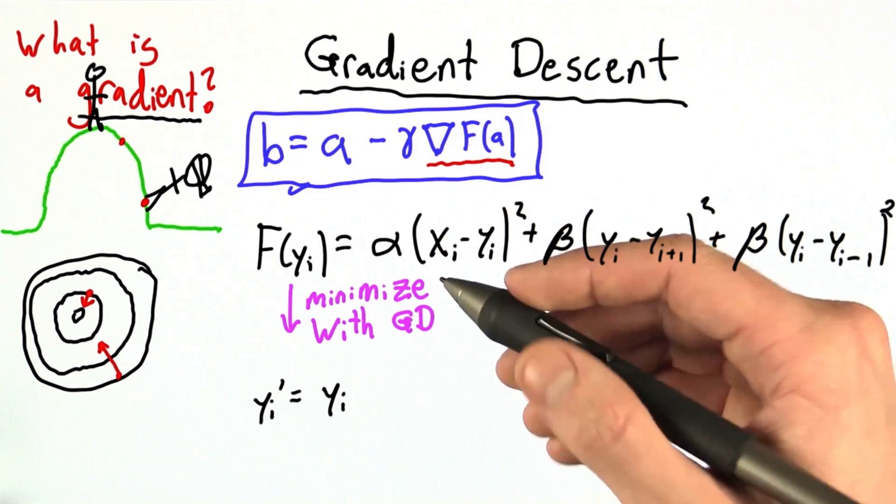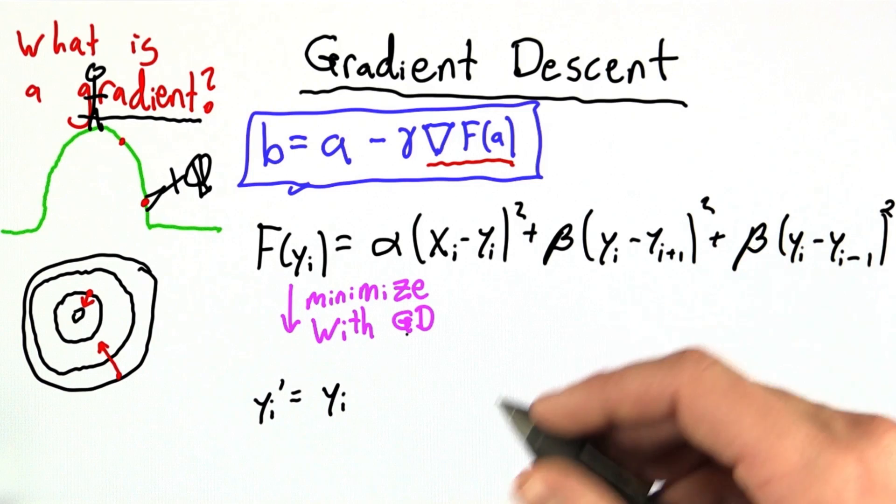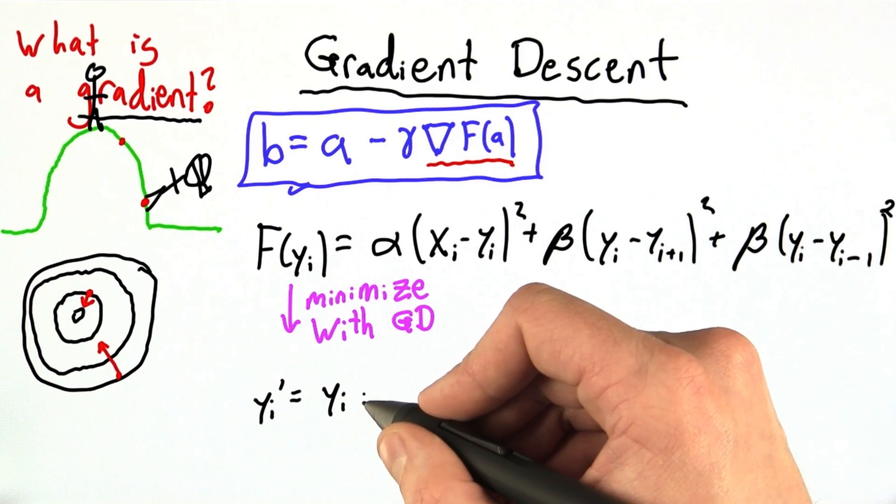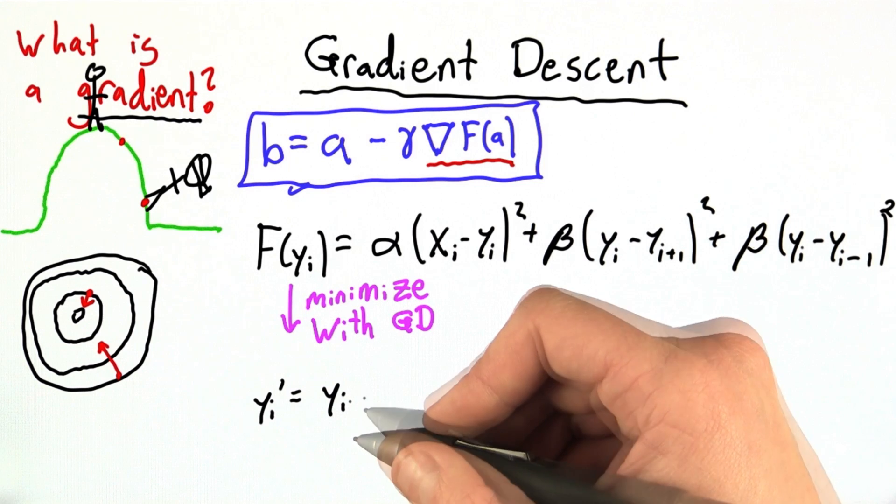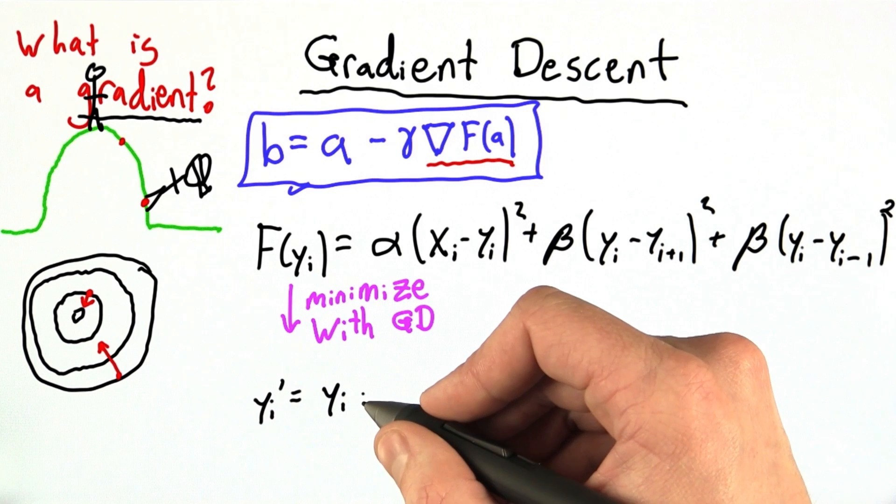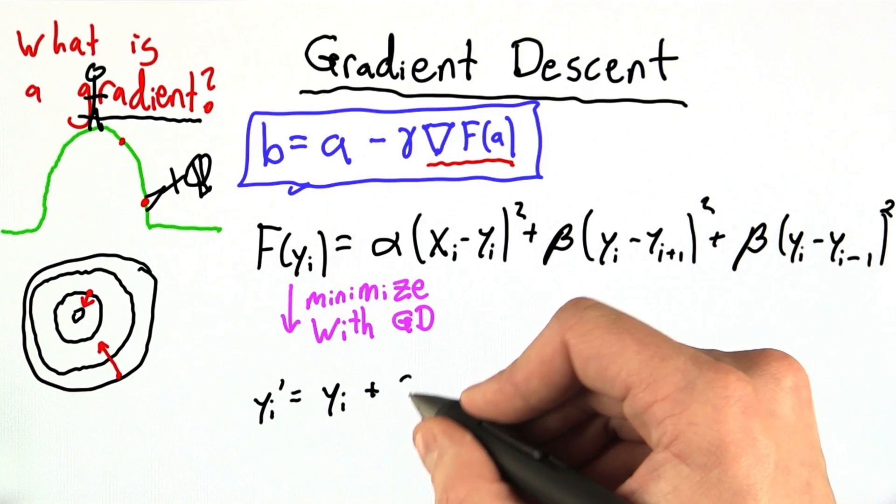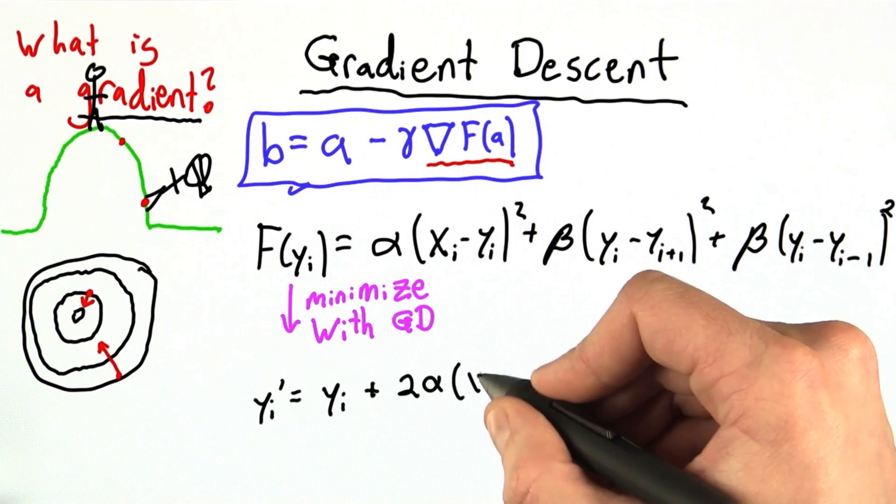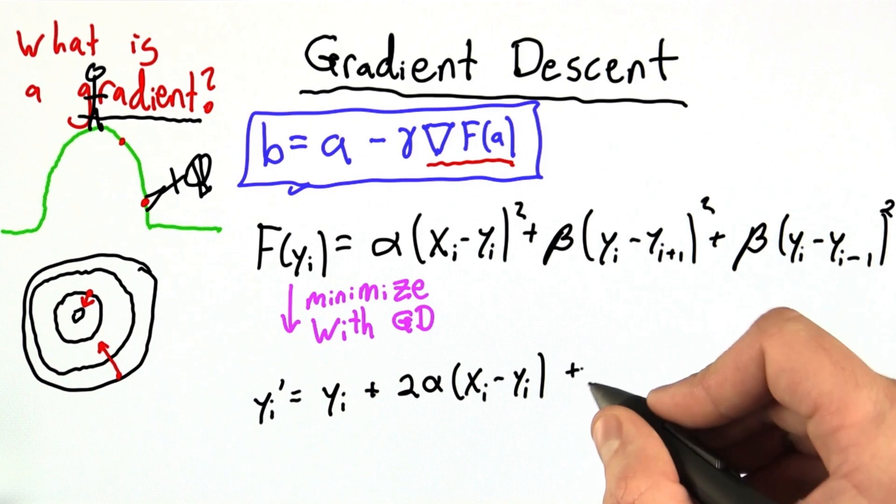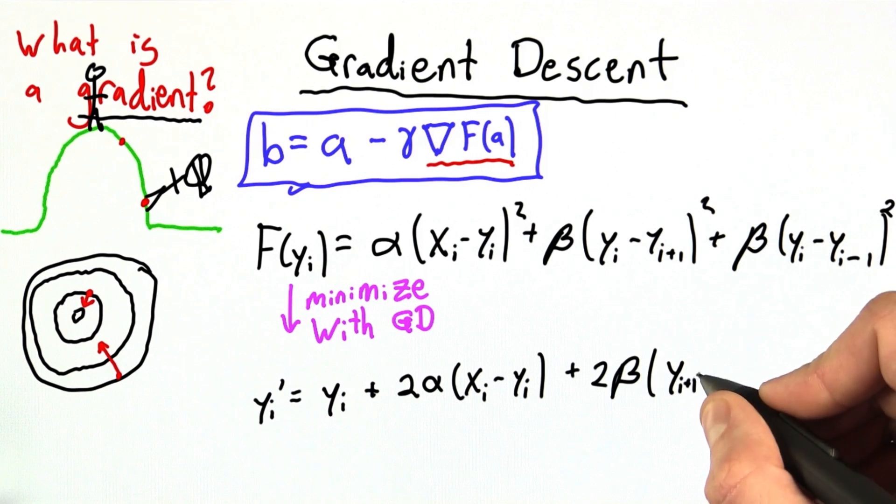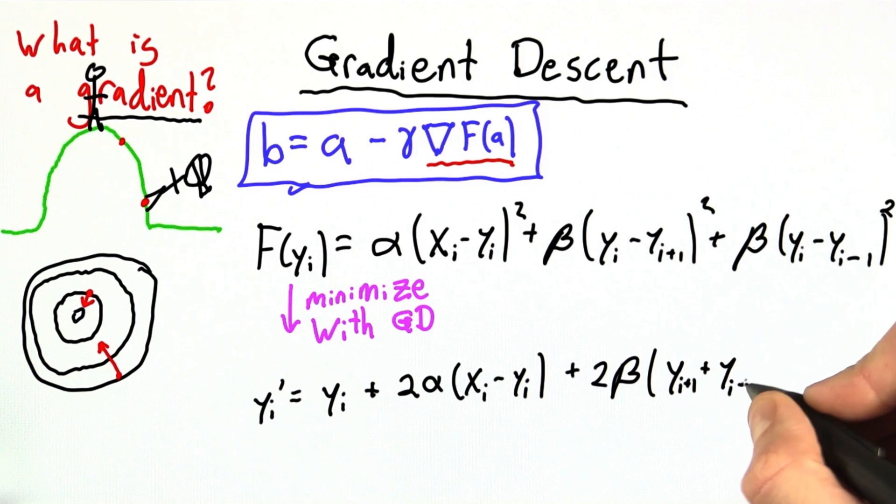If you don't know calculus, again, don't worry about it. And if you do, this is a fairly simple derivative. So I'm going to write it simplified. I'm not going to show you all the intermediate steps. But once we do this out, we find that yi prime equals yi plus 2 alpha times xi minus yi plus 2 beta times yi plus 1 plus yi minus 1 minus 2yi.